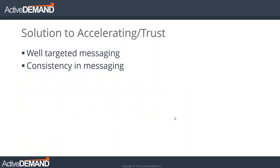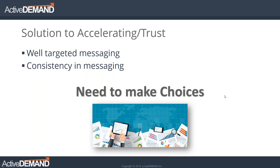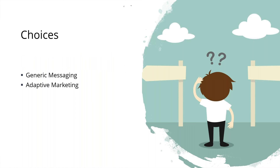The solution to accelerating the journey and building trust is well-targeted messaging at the right time and consistency in the messaging — because if you're changing the message every time they engage with you, trust is going to be eroded. From a choices perspective in multi-channel marketing, one choice would be to go with generic messaging, and the second — which I'm going to talk a lot about — is the concept of adaptive marketing for multi-channel messaging.